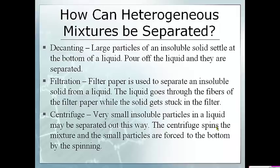So how can heterogeneous mixtures be separated? There are four ways. Number one is decanting. If you have things that have different densities, one thing will sink to the bottom and the other thing rises to the top and you can pour off the liquid. Think of sand in a container — the sand will sink to the bottom, the water will rise to the top, and you can pour the water off into another container while the sand stays behind. We call that decanting.